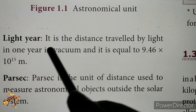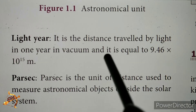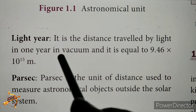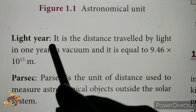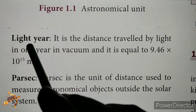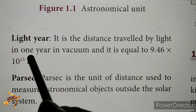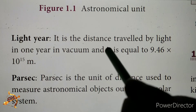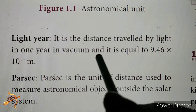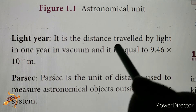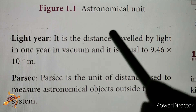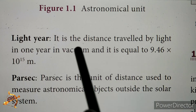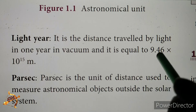Next is the light year. A light year is the distance traveled by light in one year in vacuum. Since light travels at very high speed, the distance it covers in one year is an enormous value used to measure cosmic distances.